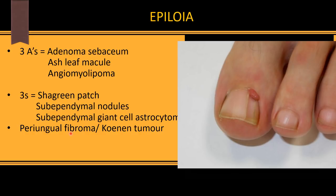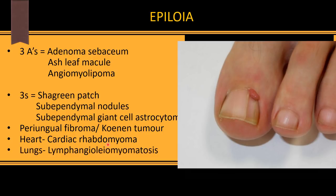Tuberous sclerosis also forms periungual or subungual fibroma — a Koenen tumor — around or under the nail. In the heart, rhabdomyoma forms from muscle proliferation. In the lungs, lymphangioleiomyomatosis forms. Tuberous sclerosis causes proliferation of cells — hamartomas — everywhere.